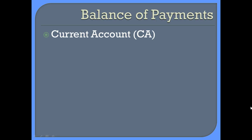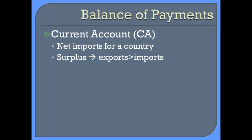The first one is the current account, and the current account looks at the net imports for a country. We're looking at the purchase of goods and services made by people in one country purchasing goods from another country, and vice versa. A surplus exists when your exports are greater than your imports — when the value of goods you're sending out is greater than the value you're bringing in — and you have a deficit when the opposite is true. This is what we usually refer to when we talk about the trade imbalance. Currently the United States has a trade deficit.